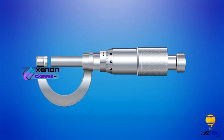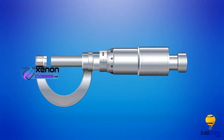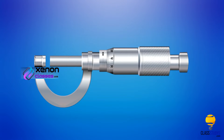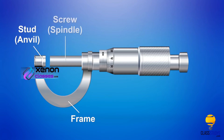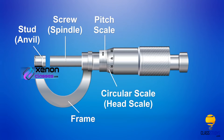Before that, we have to familiarise ourselves with the main parts of the screw gauge. They are: Frame, Stud or Anvil, Screw or Spindle, Pitch Scale, Circular Scale or Head Scale, and Thimble.